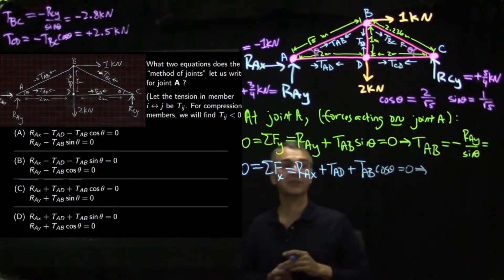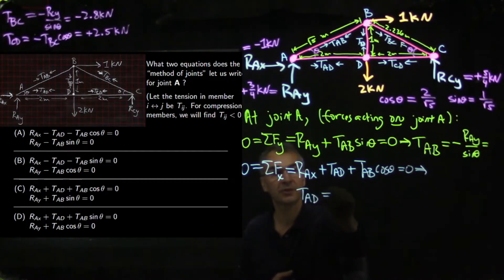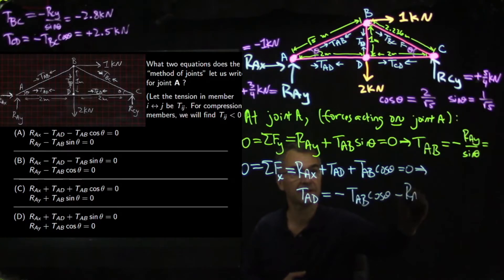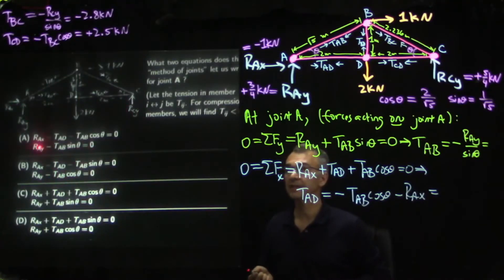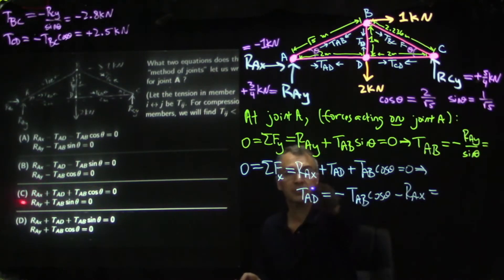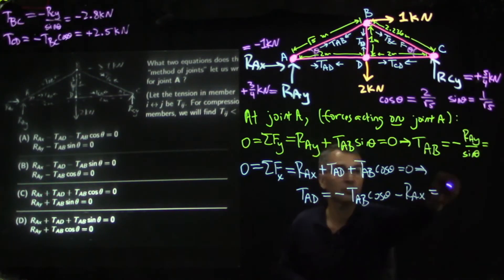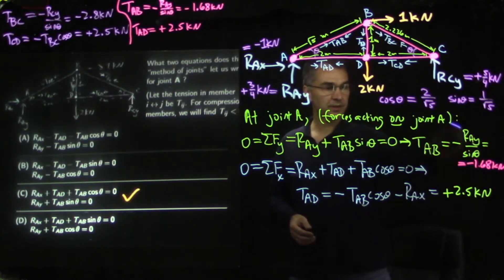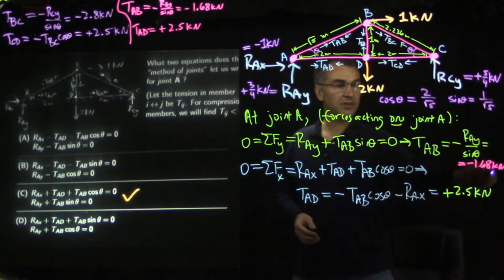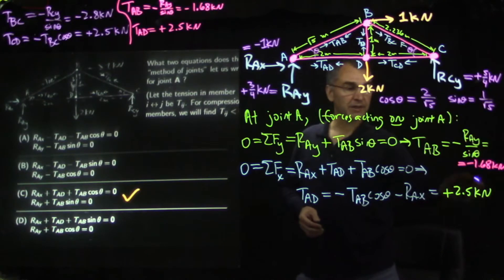There's only one unknown here — T-AD. T-AD equals minus T-AB cosine theta minus R-A-X. Looking at the candidate answers, I like C: R-A-X plus T-AD plus T-AB cosine theta equals zero, and R-A-Y plus T-AB sine theta equals zero. Plugging in numbers: T-AB is minus 1.68 kilonewtons, and T-AD is plus 2.5 kilonewtons.